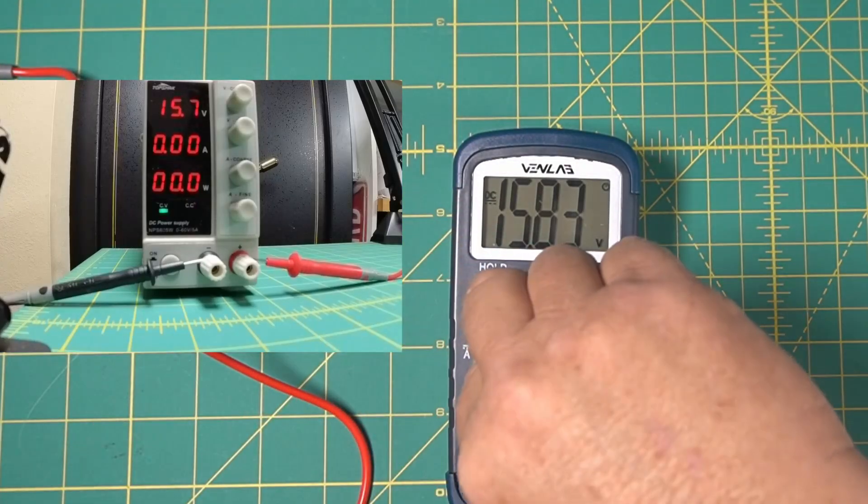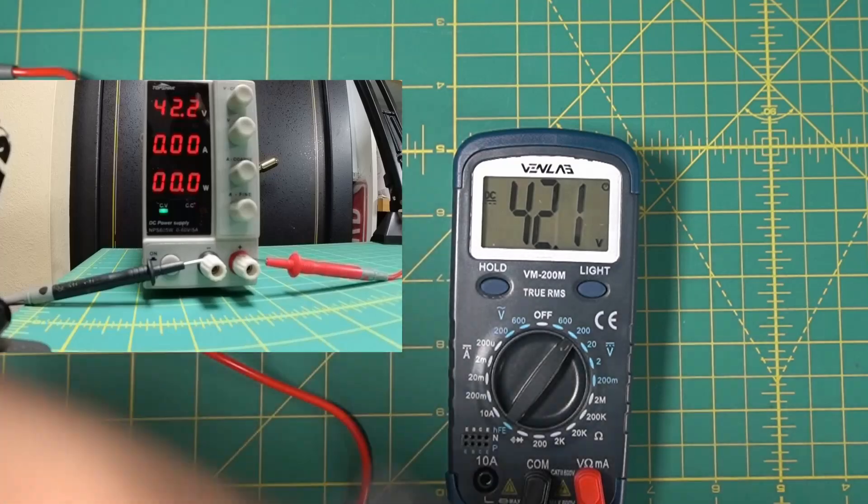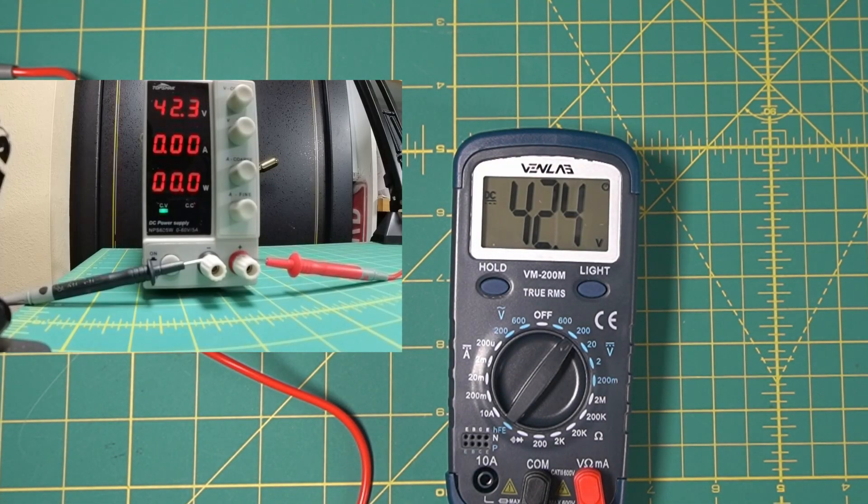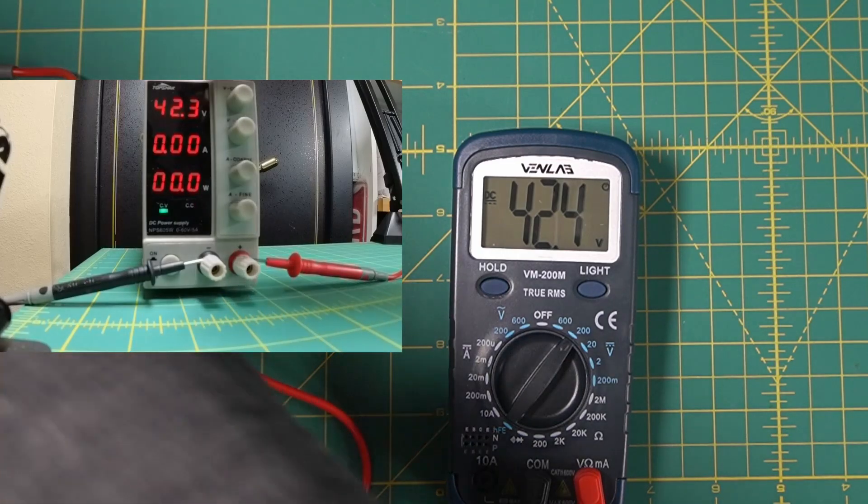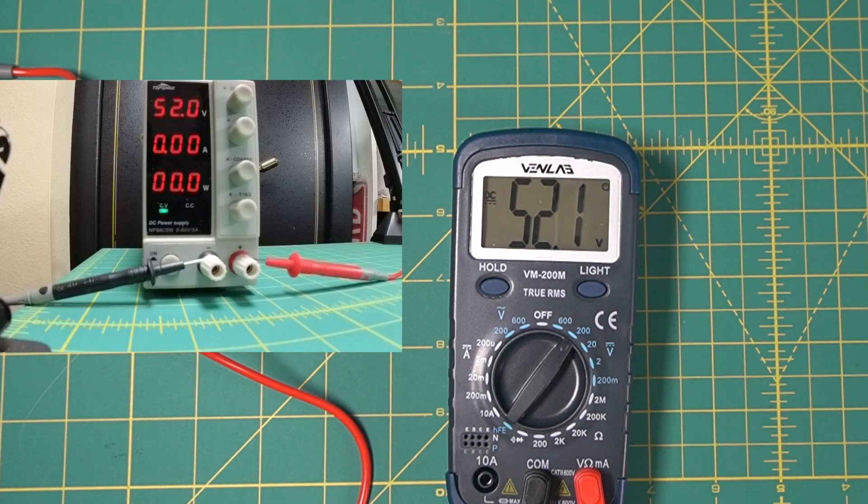Let's go above 20 now. So we're 42.2 and it says 42.4, 42.3. So that's pretty close. Let's just max this thing out. So it's 52. And that says 52.1. So that works pretty good.